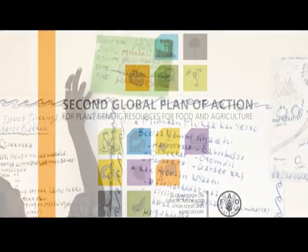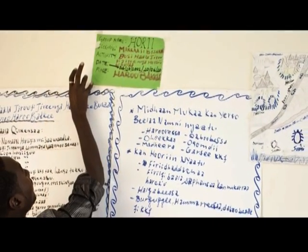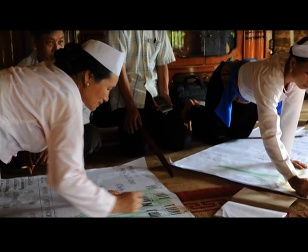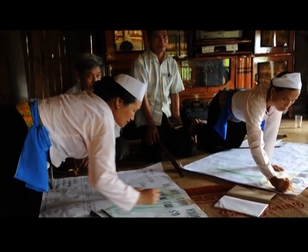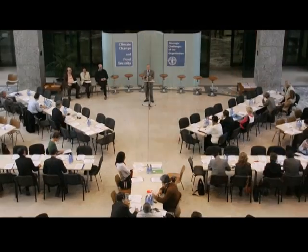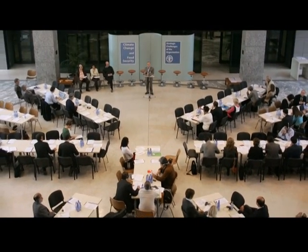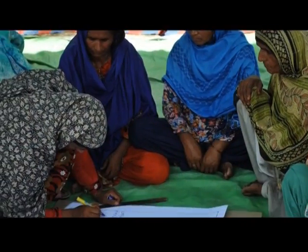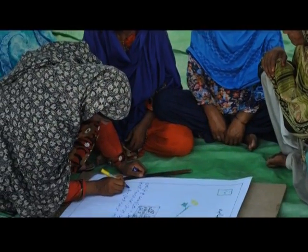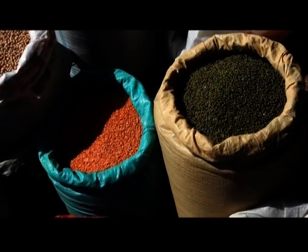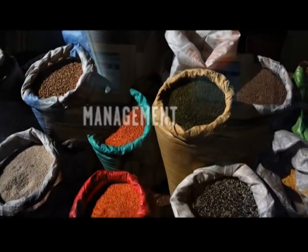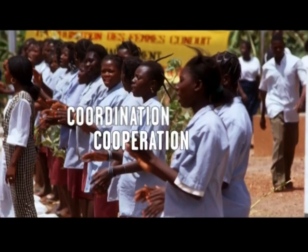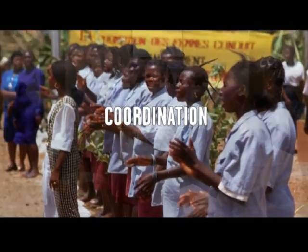The Second Global Plan of Action is a framework, guide and catalyst for action at national, regional and international levels. It aims to create an efficient system for the conservation and sustainable use of plant genetic resources, including seed systems, through better management, cooperation and coordination of all relevant activities.